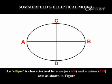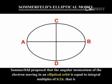An ellipse is characterized by a major axis AB and a minor axis CD, as shown in the figure. Sommerfeld proposed that the angular momentum of the electron moving in an elliptical orbit is equal to integral multiples of h by 2π.